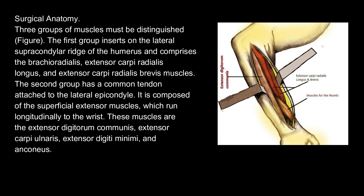Surgical Anatomy. Three groups of muscles must be distinguished. The first group inserts on the lateral supracondylar ridge of the humerus and comprises the brachioradialis, extensor carpi radialis longus, and extensor carpi radialis brevis muscles. The second group has a common tendon attached to the lateral epicondyle. It is composed of the superficial extensor muscles which run longitudinally to the wrist: the extensor digitorum communis, extensor carpi ulnaris, extensor digiti minimi, and anconeus.